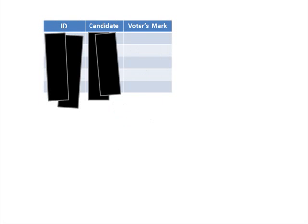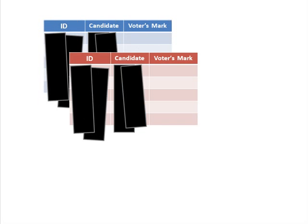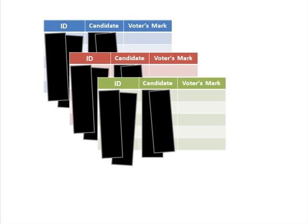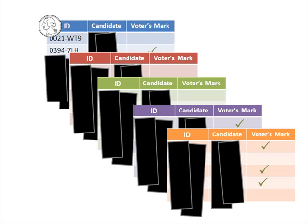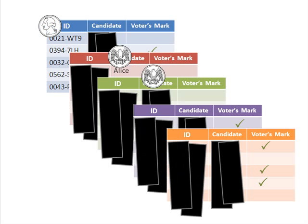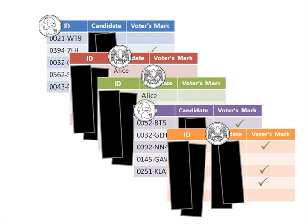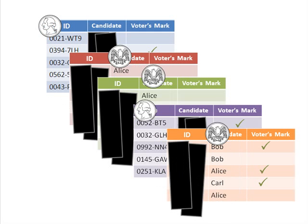Now remember, we don't peel off the tape from both columns at the same time, to protect ballot secrecy. But what we could have done was created another ballot table with its own shuffling. In fact, the election officials could produce as many tables as are necessary. The public can get together and flip a coin — heads we peel off the ID tape, tails we peel off the candidate tape. We do this for each table, and in this way we can run the audit on all the tables and compare the results to each other and to the official outcome.